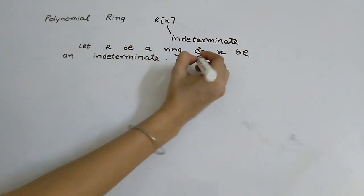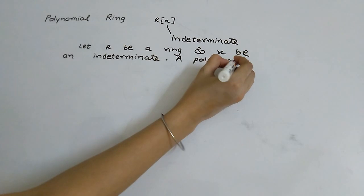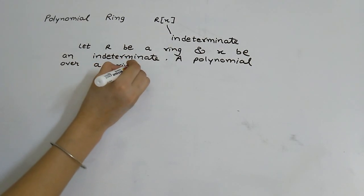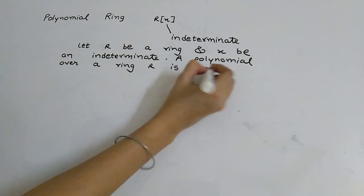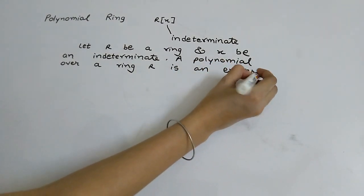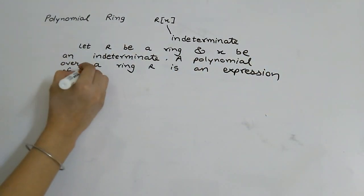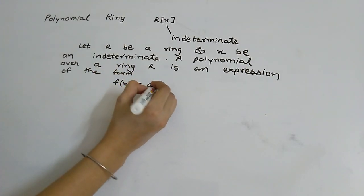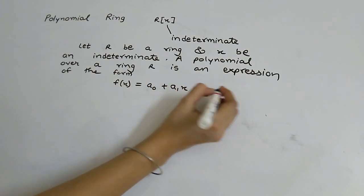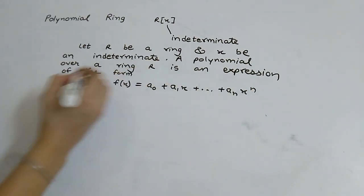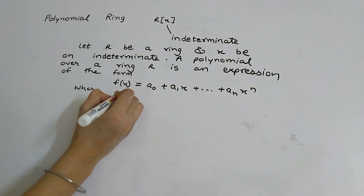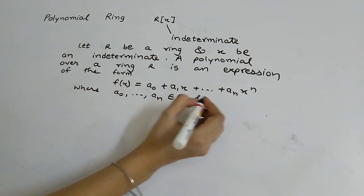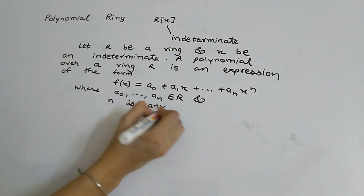A polynomial over R is an expression of the form f(x) = a0 + a1x + ... + anx^n, where a0, a1, ..., an all belong to R and n is any non-negative integer.